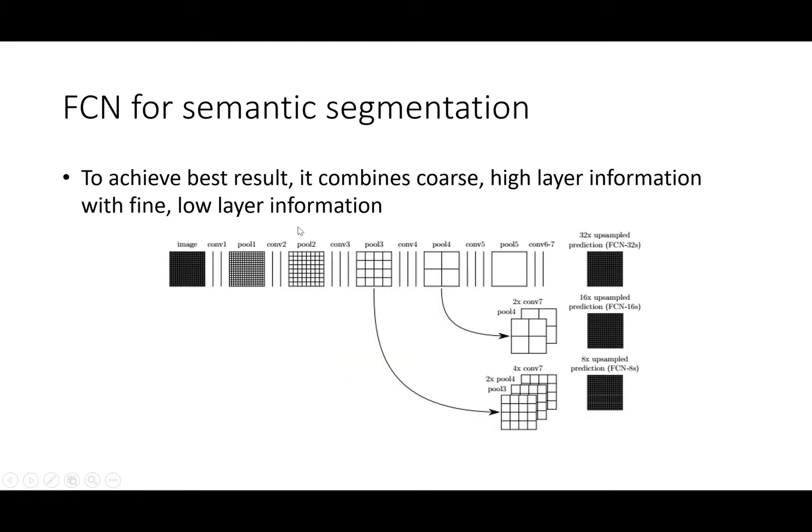In order to achieve the best results, we combined the feature maps in multiple layers. We combined the coarse higher layer information with the fine lower layer information. The coarse layer information can provide us with a smooth boundary, while the fine lower layer information can provide us with the details.